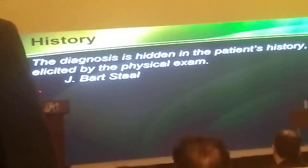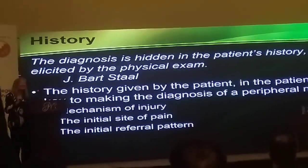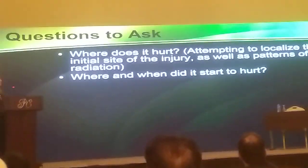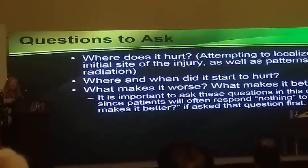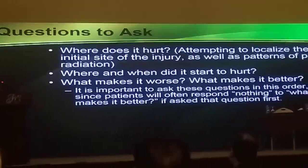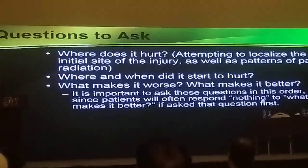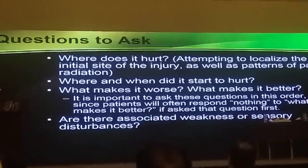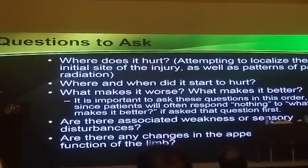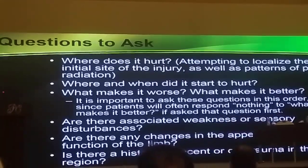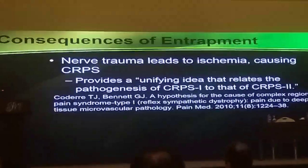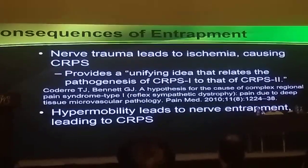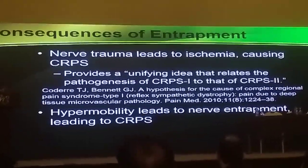The diagnosis is made by the history and confirmed by physical exam. The history given by the patient in their own words is critical — the pattern is what's important. Key questions include: where and when did it start to hurt, where does it hurt, what makes it worse, and what makes it better. Ask about associated weakness or sensory problems, changes in appearance or function of the limb, and any old trauma. Nerve trauma leads to ischemia, which causes CRPS — this is the theory that combines nerve entrapments with CRPS. Hypermobility can also lead to nerve entrapment.